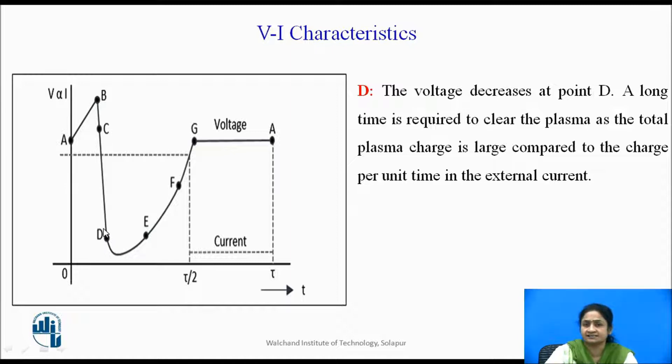At point D, the voltage decreases. We can see in this graph, at the point the voltage is dropped. The voltage is decreased at point D, and a long time is required to clear the plasma. As the total plasma charge is large compared to the charge per unit time in the external circuit.